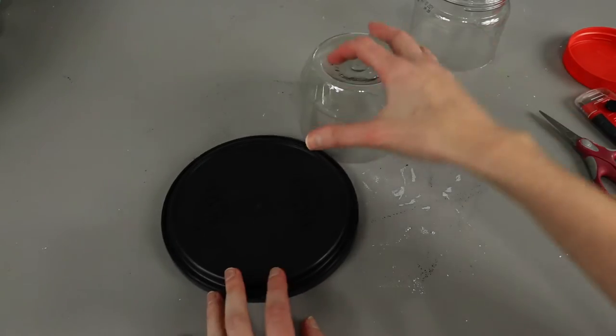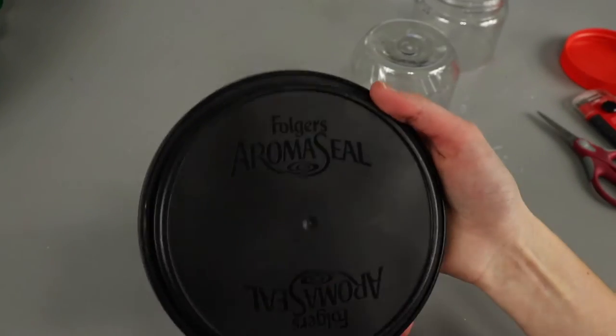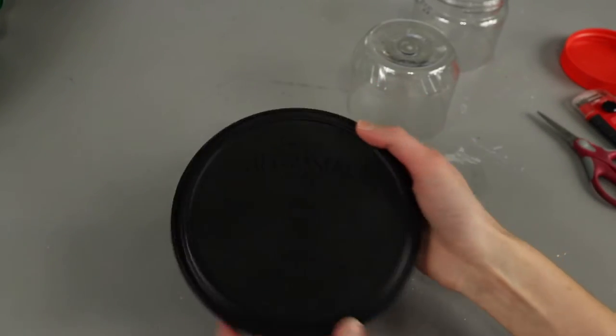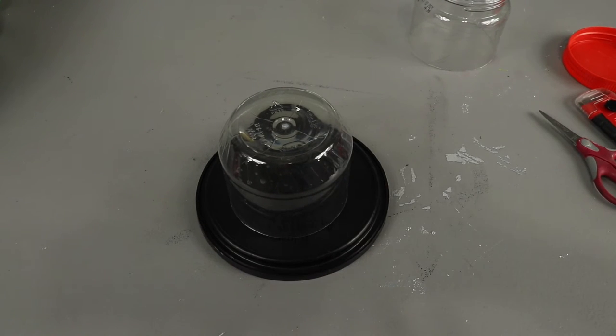So after cutting out the jar for the top of the hat, I realized I didn't want to go through the struggle of cutting out a circle from the detergent pod box, so instead I found a lid from an old coffee container and it was already black so it also saves me from some painting.